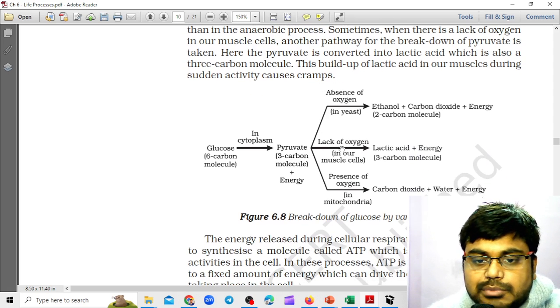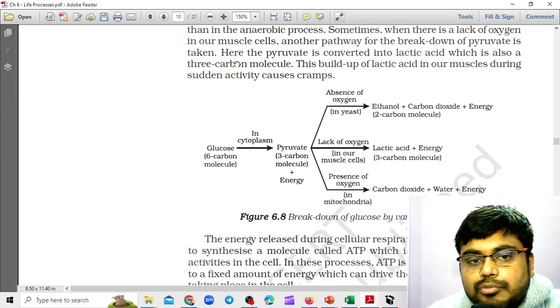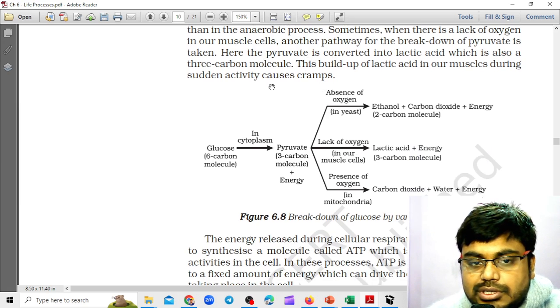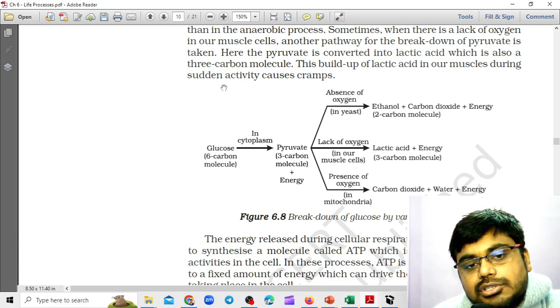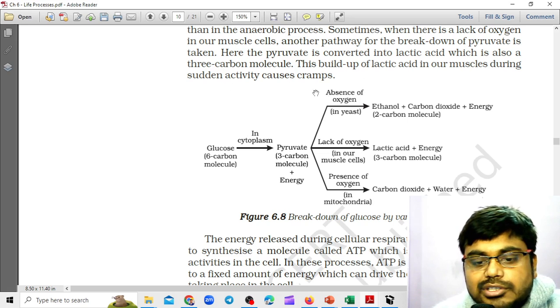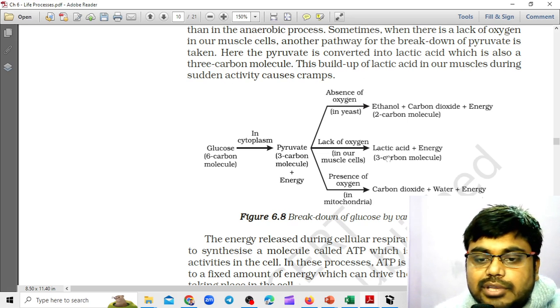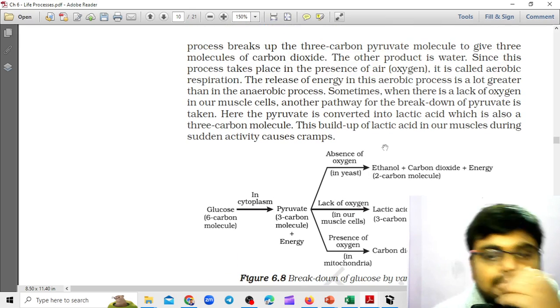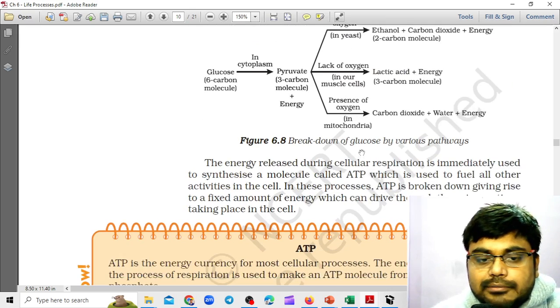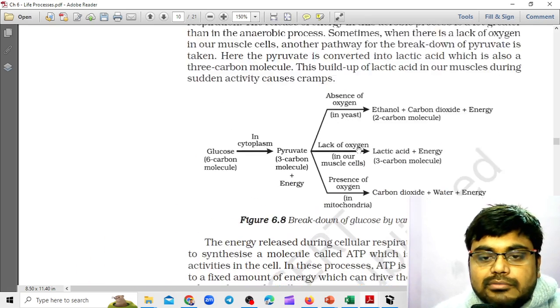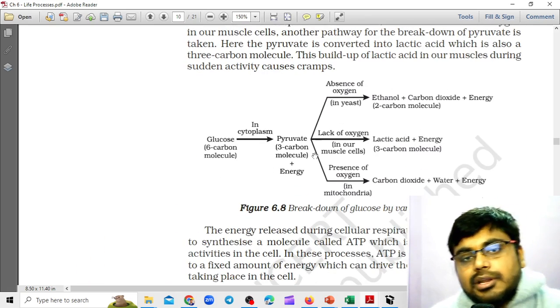Another pathway for the breakdown of pyruvate is taken. Here, the pyruvate is converted into lactic acid, which is also a three-carbon molecule. The buildup of lactic acid in our muscles during strenuous activity causes cramps. So this flowchart you have to draw.